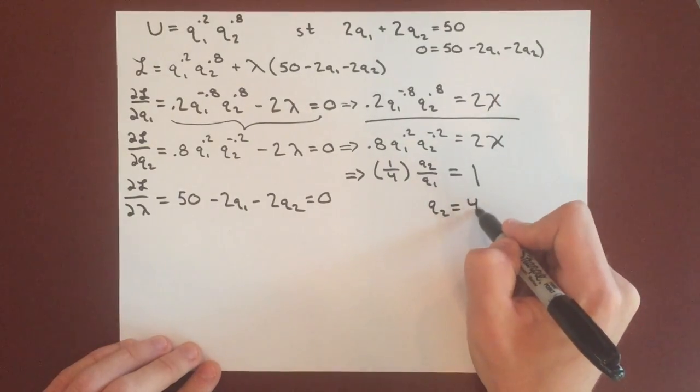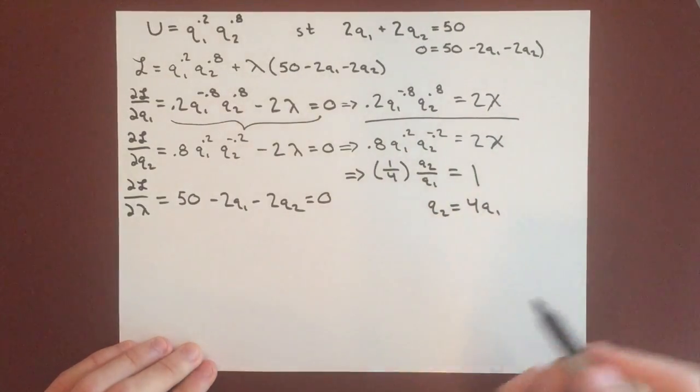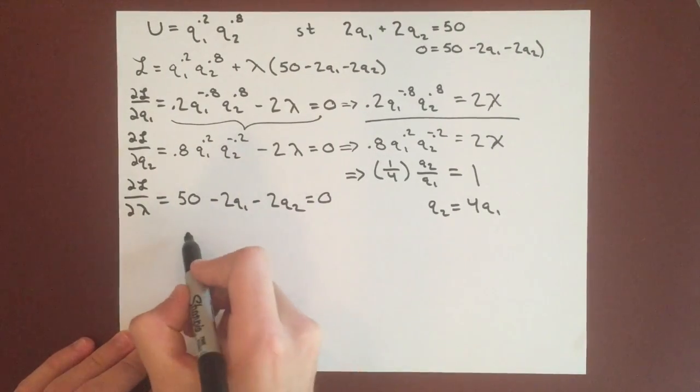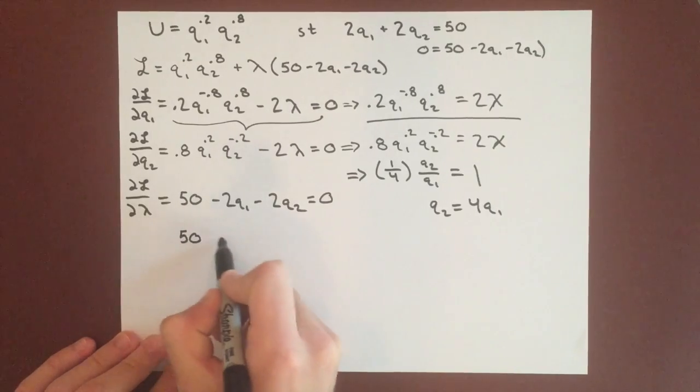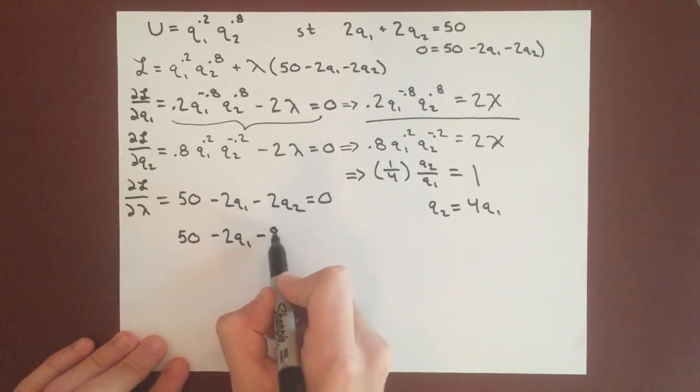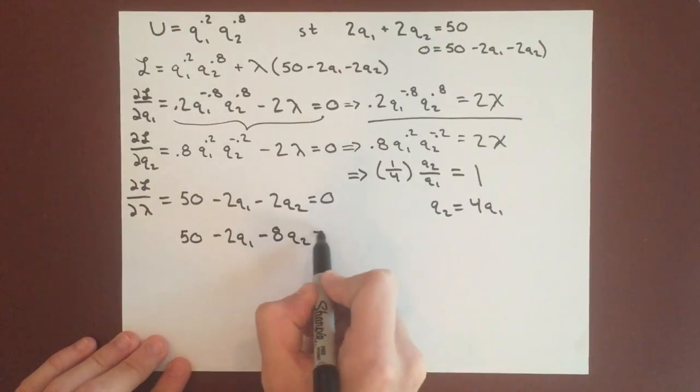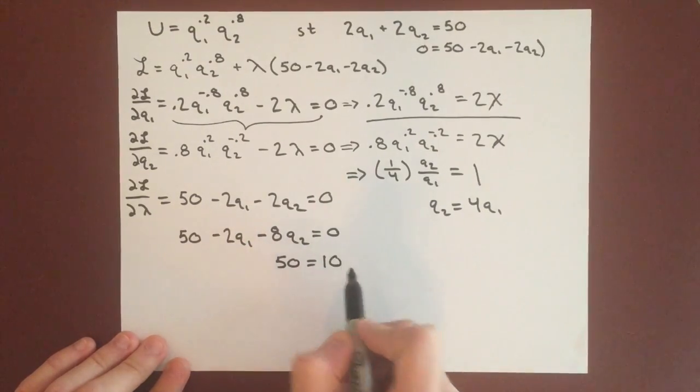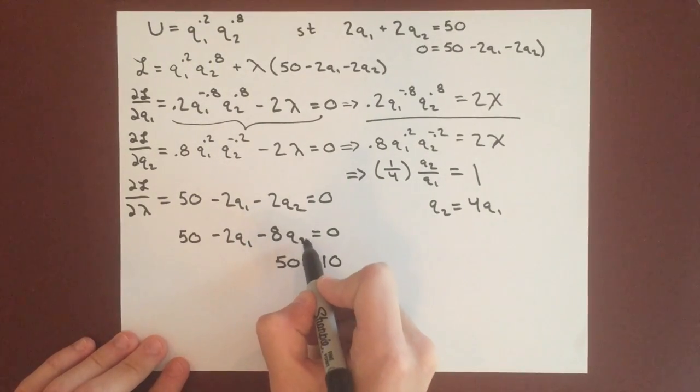Now we can plug that in to the partial derivative of lambda, and we get 50 minus 2q1 minus 8q2 equals 0. And so 50 equals 10, sorry this should be a q1 there, 10q1.